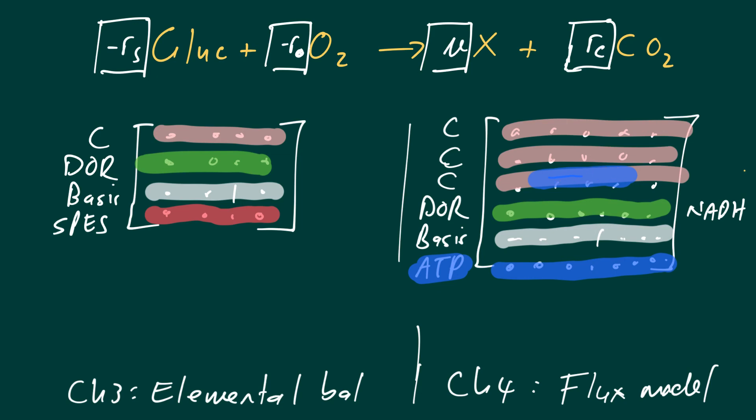So what it boils down to, is that the flux model gives you more prediction capability in terms of predicting all the rates. And it can be one, but it can be more than one equation that you obtain.